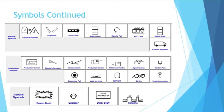Moving on to information symbols, we have production control, manual information, electronic information, production Kanban, withdrawal Kanban, signal Kanban. I won't go into the rest — you can see them there on the slide. I'm not as familiar with information symbols, so I can't really explain too many of those.